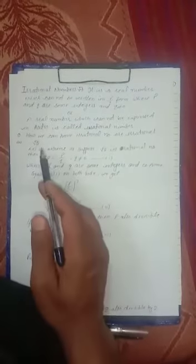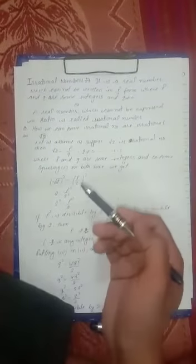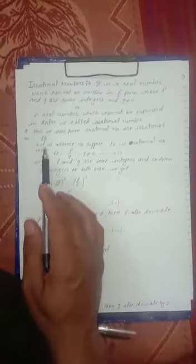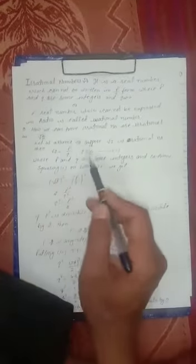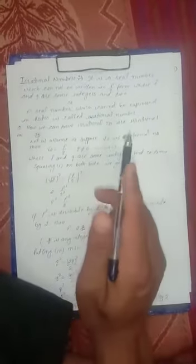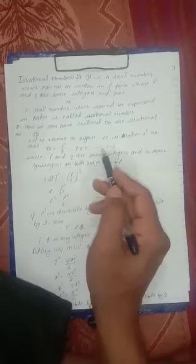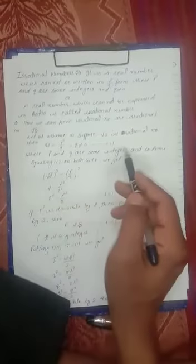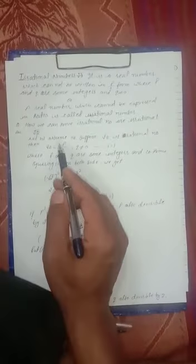Let us take root 2. I have solved already this question for you. Firstly we have to suppose or assume converse of irrational number. Let us assume root 2 is a rational number. Then if it is a rational number, then we can write p upon q form where q not equal to zero, where p and q are some integers and co-prime to each other.